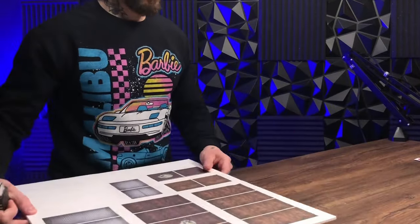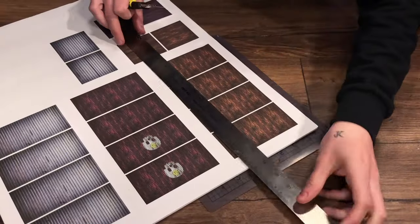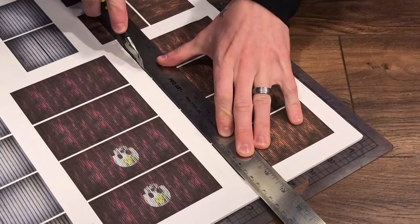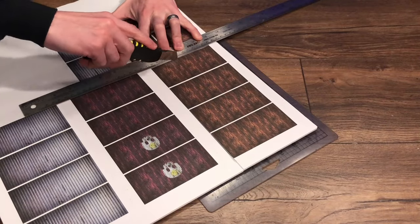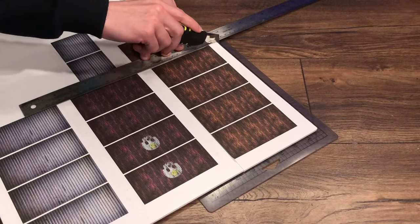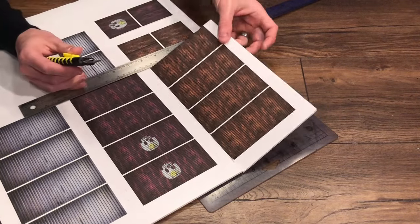As always it's very important to be using a new sharp blade when you're cutting through this board otherwise you can end up with some ragged edges. Also it's always good to do multiple shallow passes with the blade instead of one deep cut because again you could end up with some jagged edges and we definitely don't want that.